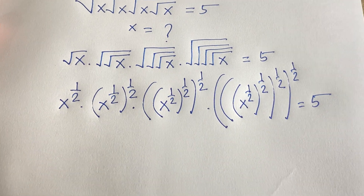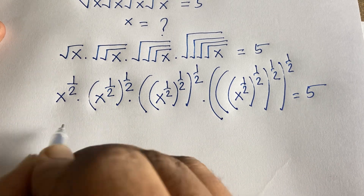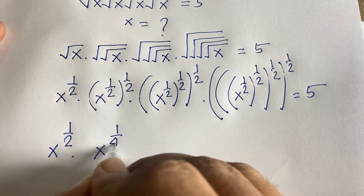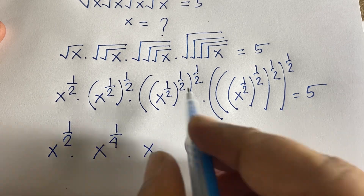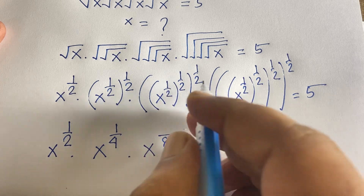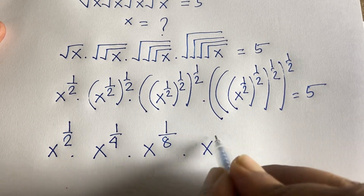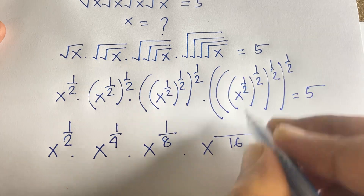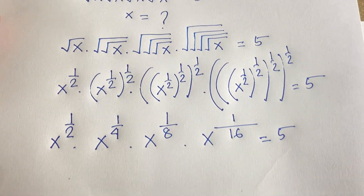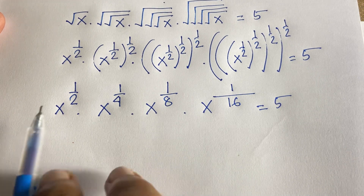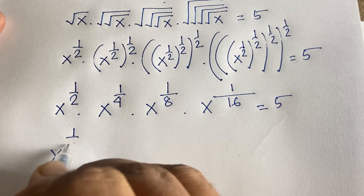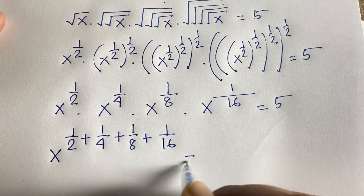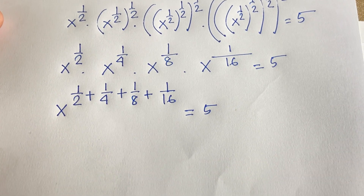Now I can clearly see it will be x to the power of 1/2, times x to the power of 1/4, times x to the power of 1/8, times x to the power of 1/16, equals 5. According to exponential rules, since the bases are the same, I add the exponents: x to the power of (1/2 + 1/4 + 1/8 + 1/16) equals 5.